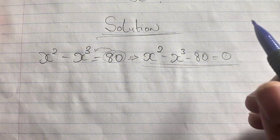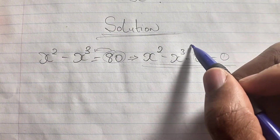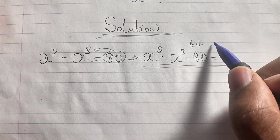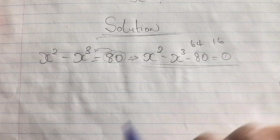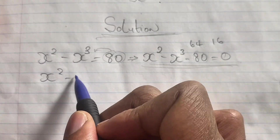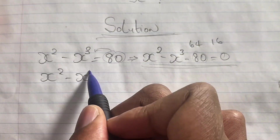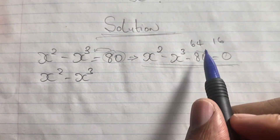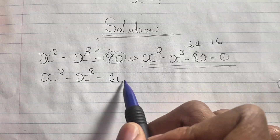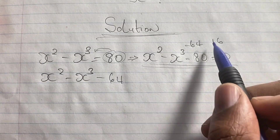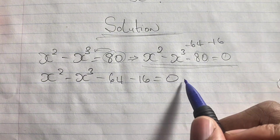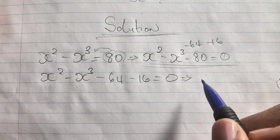Having this equation, we can further simplify by taking this negative 80. This negative 80 can be split as negative 64 minus 16. So we'll have x squared minus x cubed, then negative 64 and negative 16, and this equals zero.